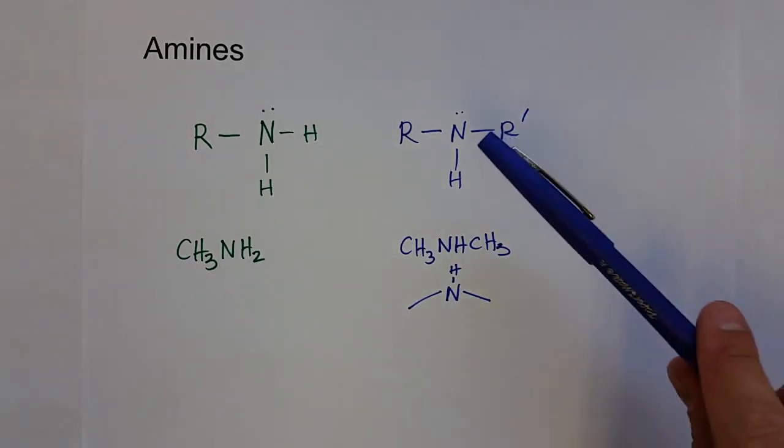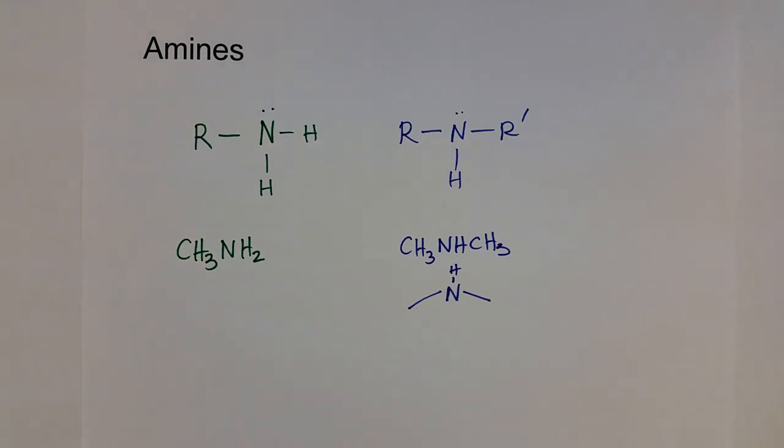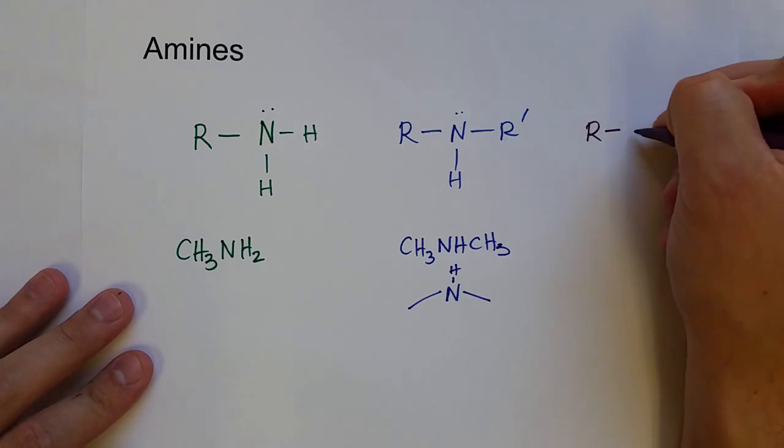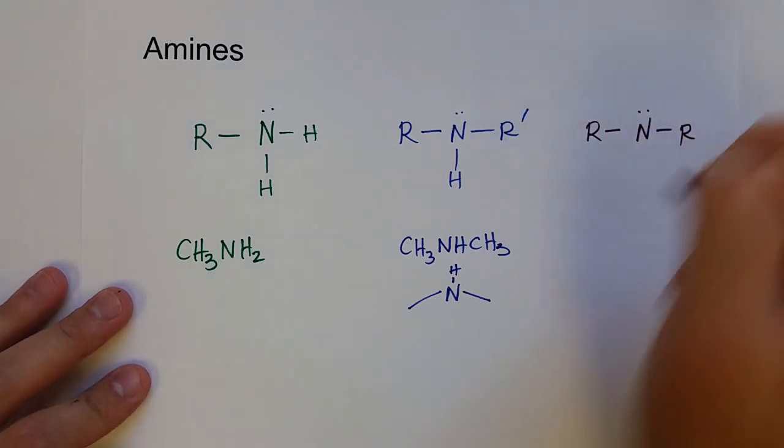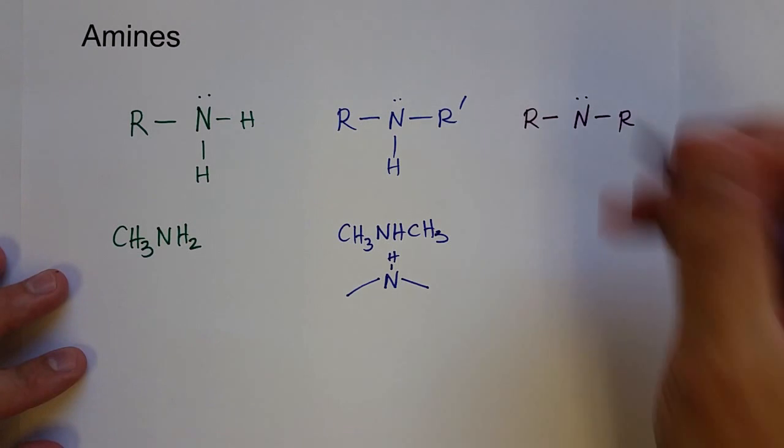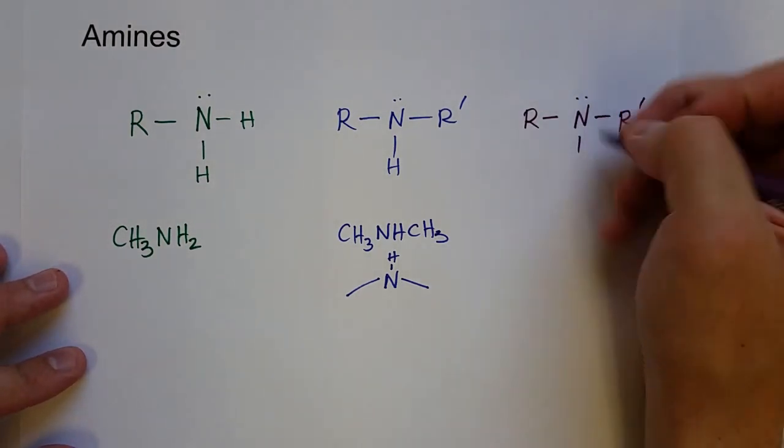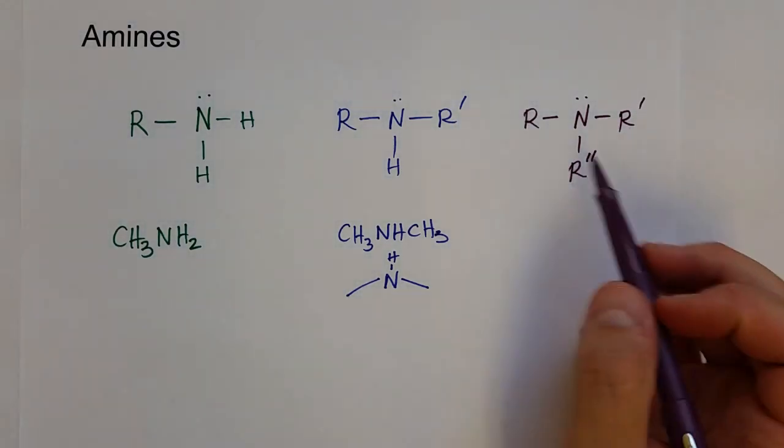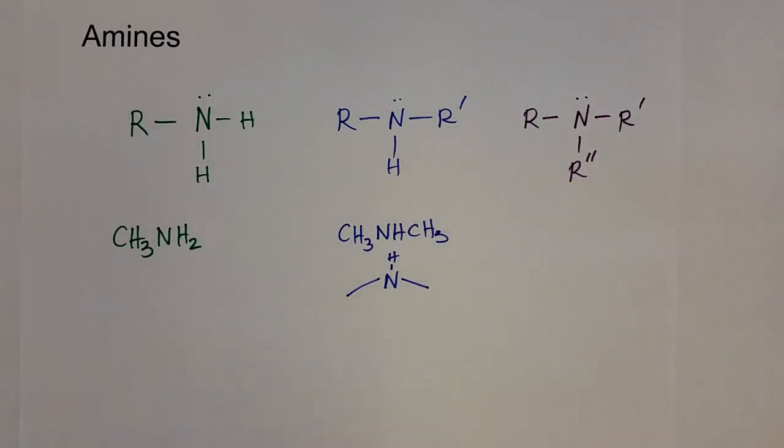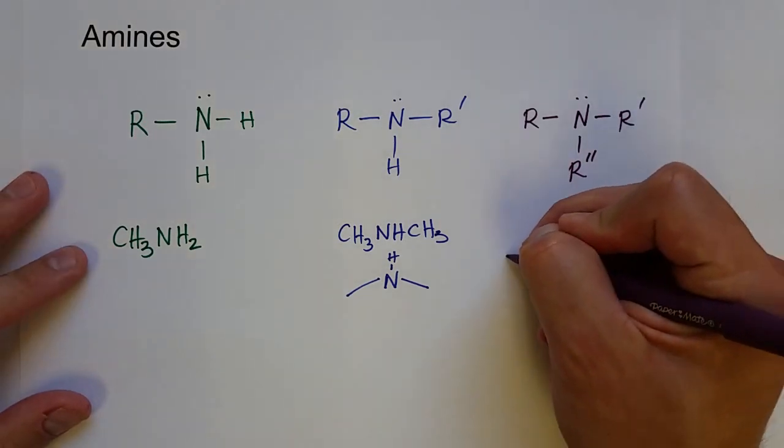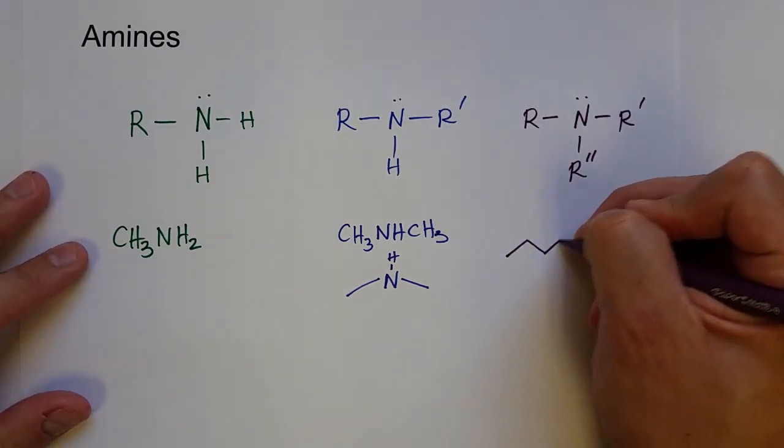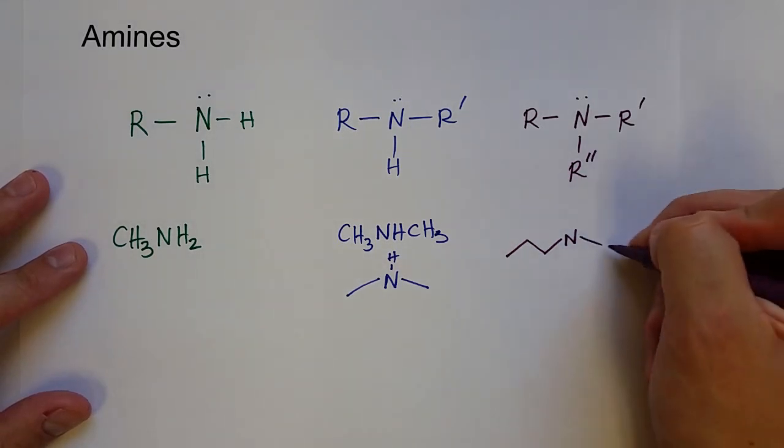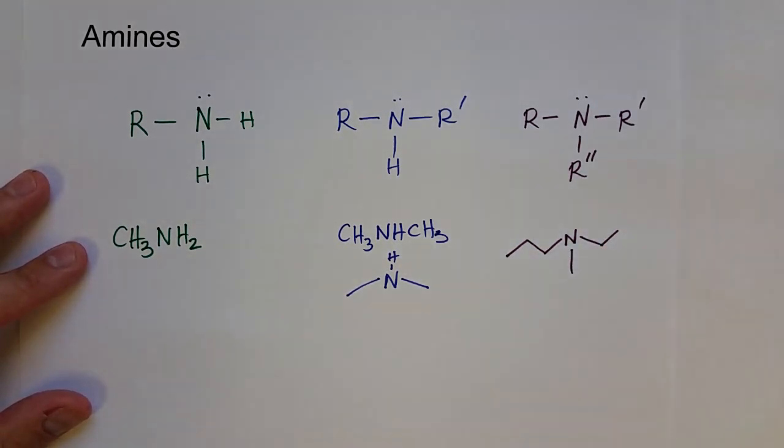Nitrogen can also bond to another hydrocarbon instead of bonding to that hydrogen, so it can be bonded to three different hydrocarbon groups. I keep putting these primes here just to indicate that they can be different—they don't have to be the same. So we could have a scenario where nitrogen is bonded to a one-two-three propyl group, an ethyl group, and a methyl group.